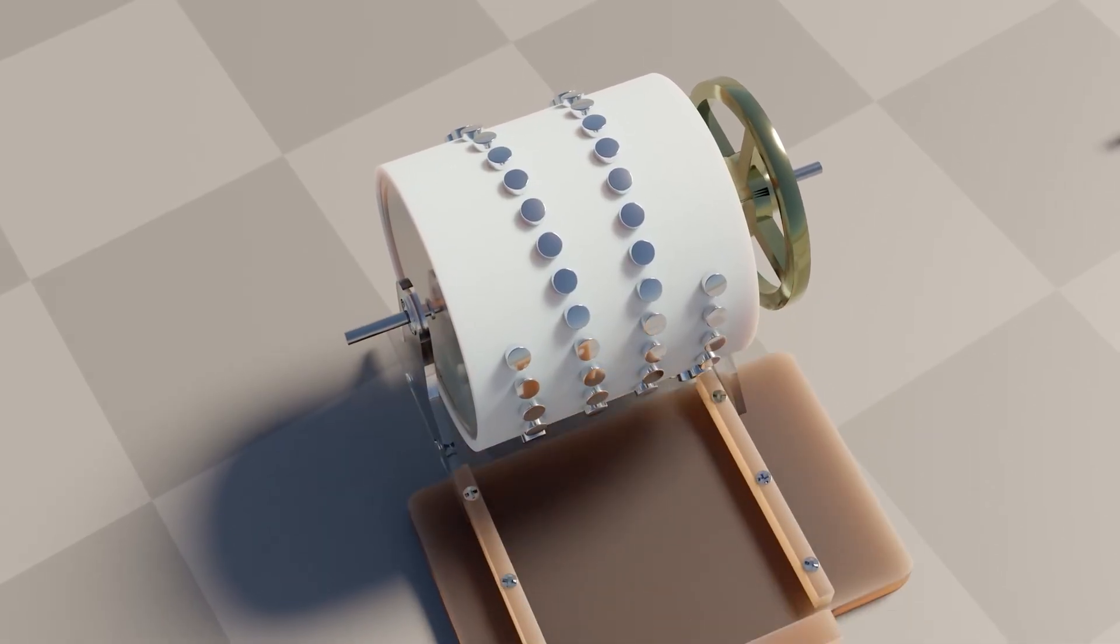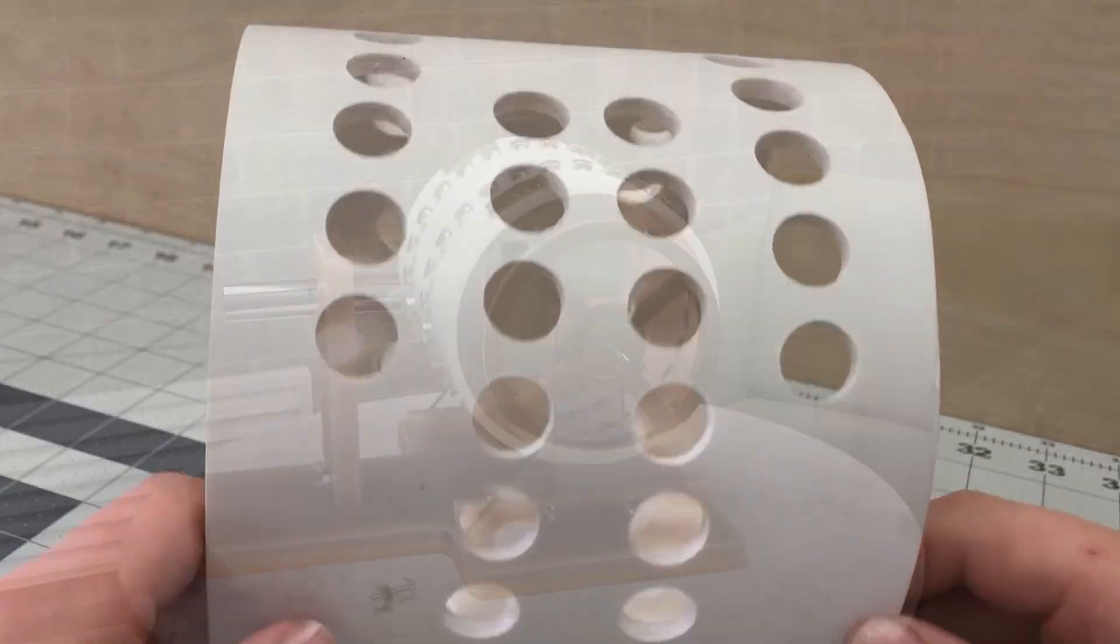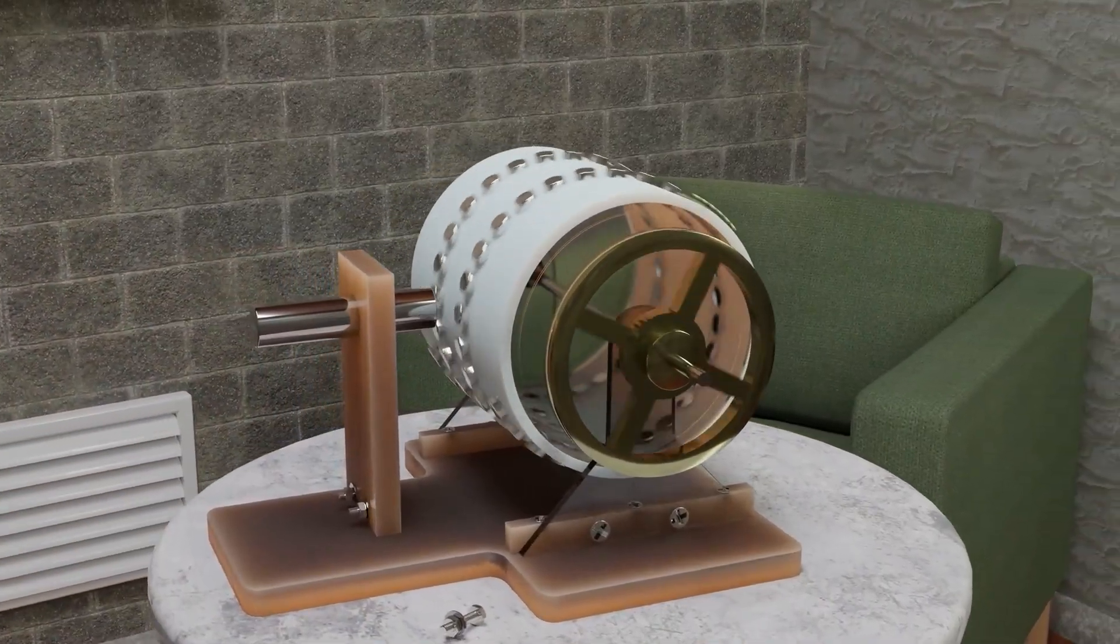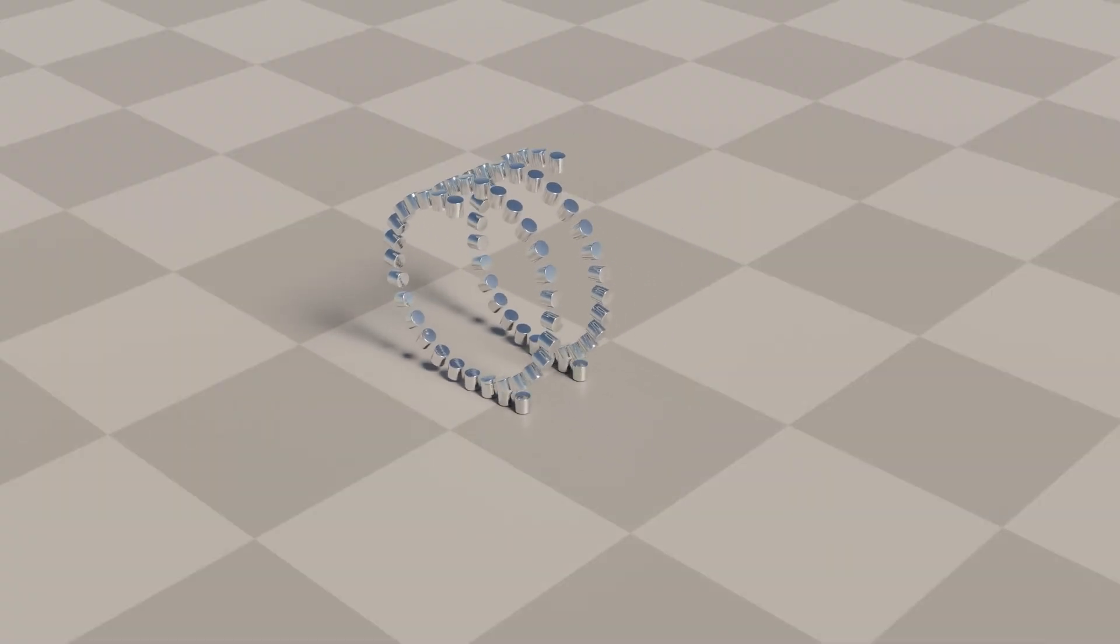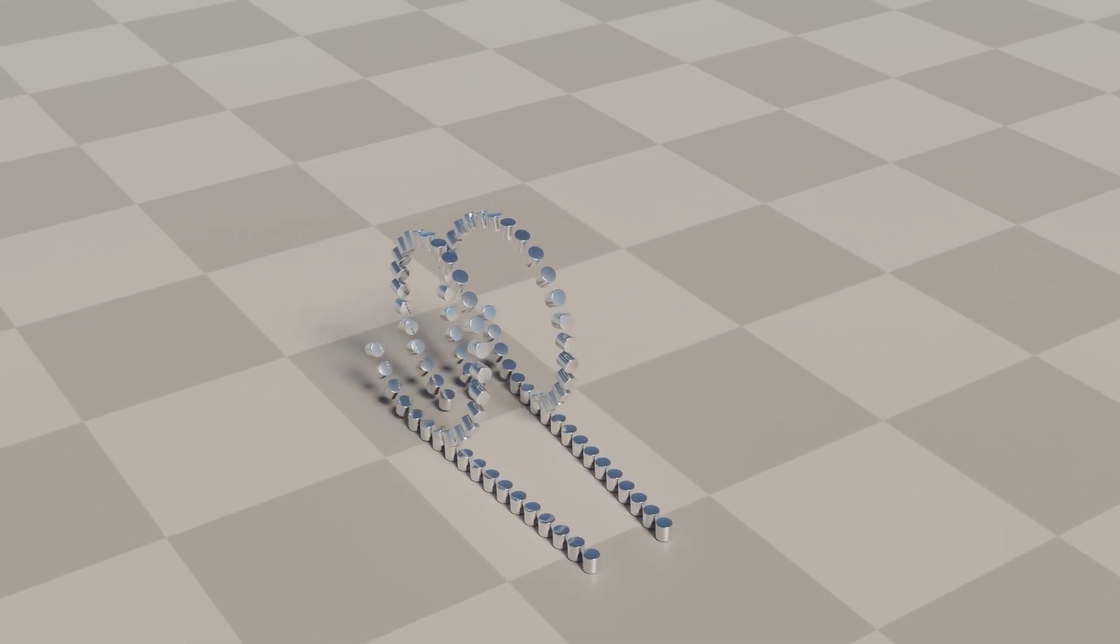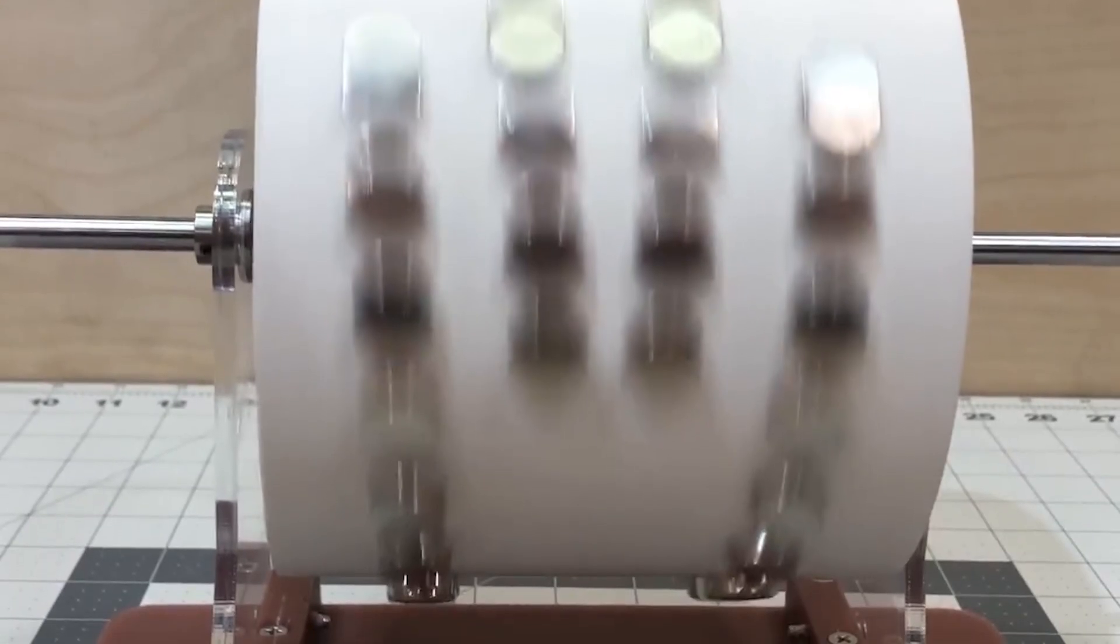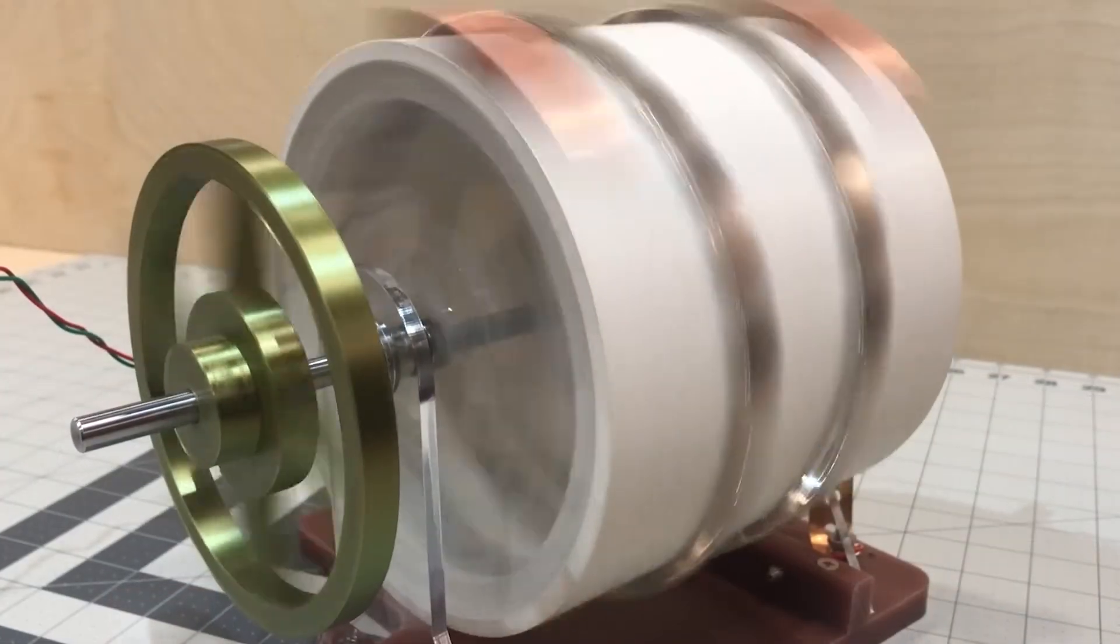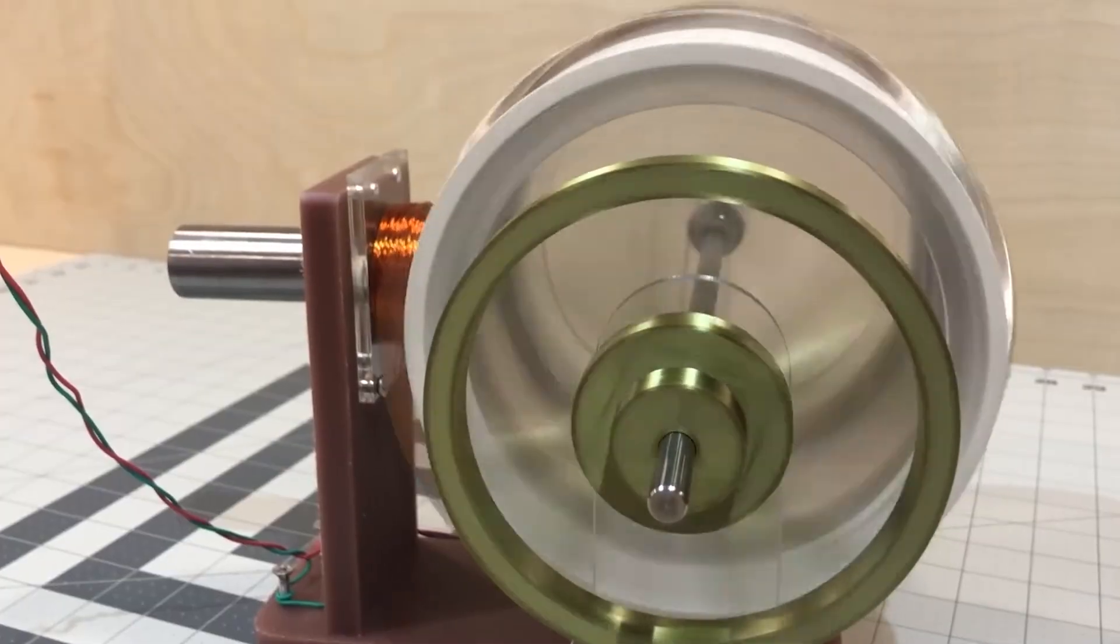The mechanics behind magnet motors are centered on the interaction between magnets. When arranged in specific patterns, magnets can create motion without the need for any external power source. The basic principle involves aligning the magnets in a way that they repel each other, creating a continuous rotation of a wheel or shaft. This motion, in theory, can then be harnessed to power a generator, producing electricity.